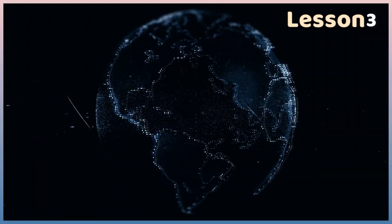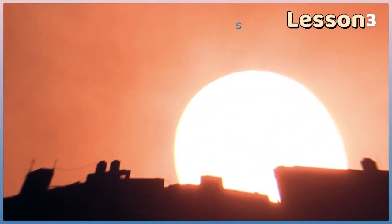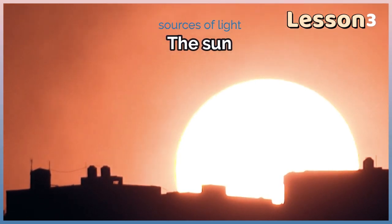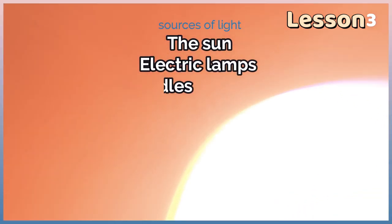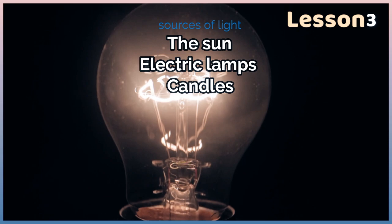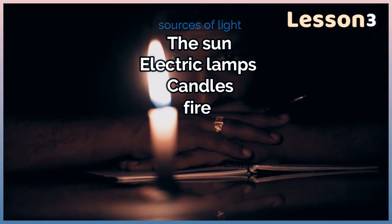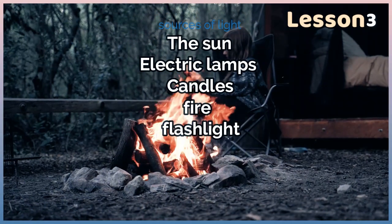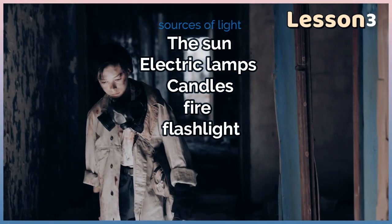Objects which emit their own light, like the sun, are sources of light. The sun is the major source of light for the earth. Other sources include electric lamps, candles, fire, and flashlights.